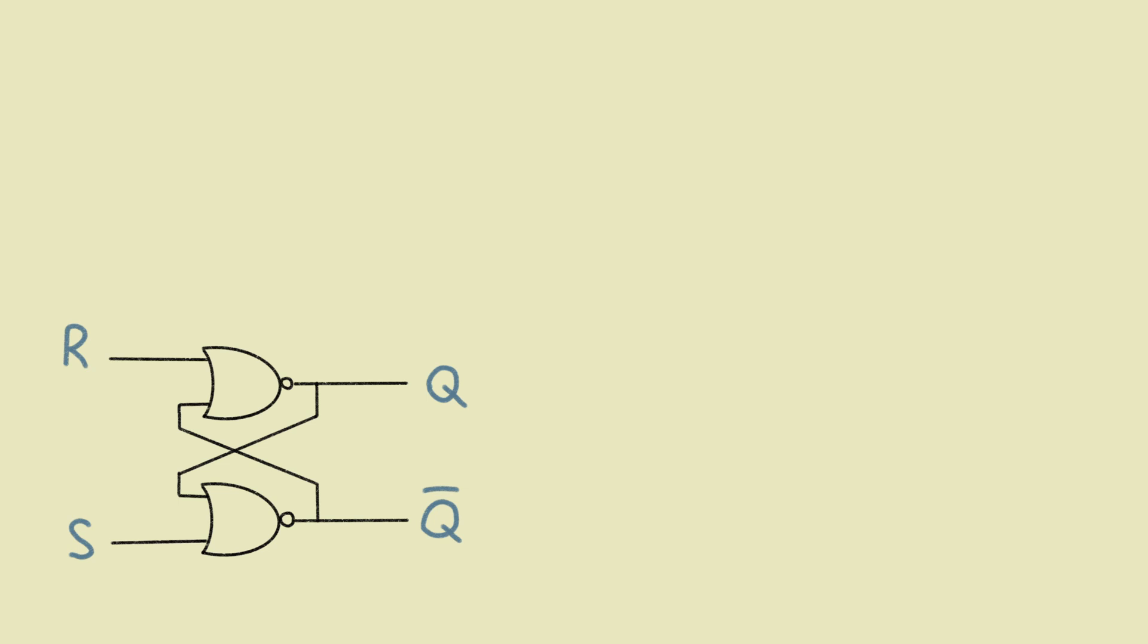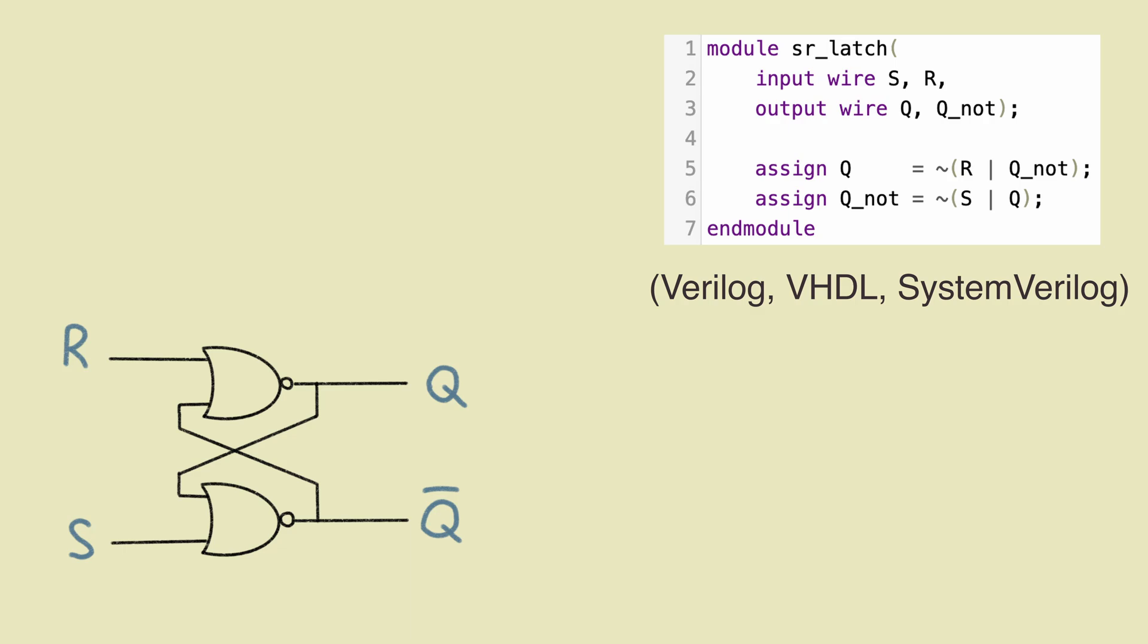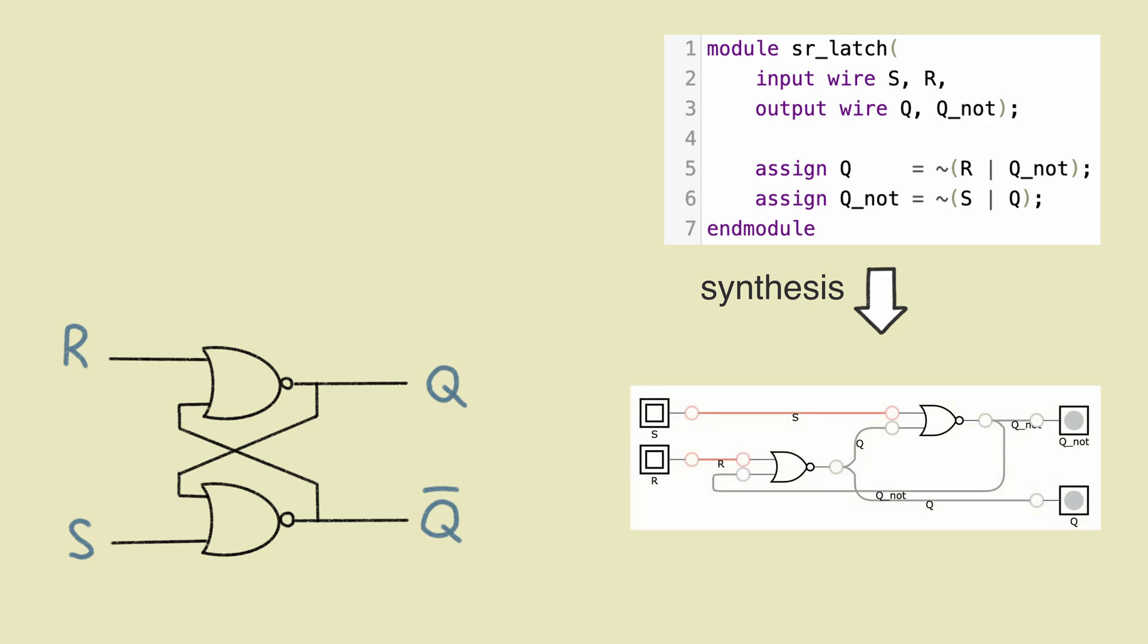Nowadays people don't connect transistors or logic elements one by one. Circuits are designed using a special language. Despite the fact that it does look like a programming language, it is not. The result of compilation, or to be correct, synthesis, is not a program, but the actual CPU circuit. So with such a hardware description language, people can describe how all the wires and elements are connected. So we have done a complete HDL description of our CPU circuit.